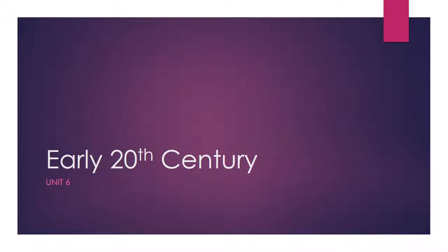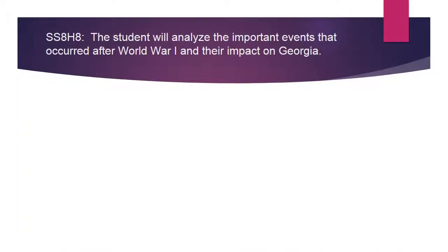As we move into Unit 6, we're looking at the early 20th century in Georgia. There are two standards that we're going to be covering in this unit. The first is Standard 8: the student will analyze the important events that occurred after World War I and their impact on Georgia.